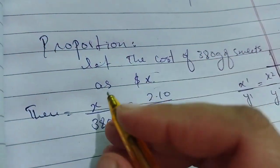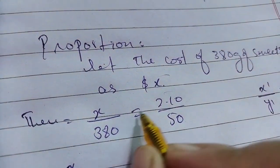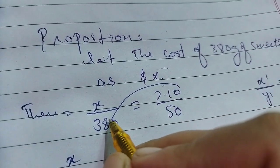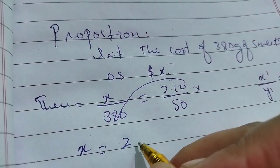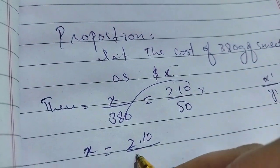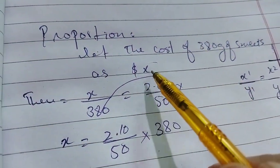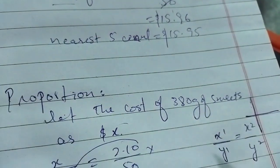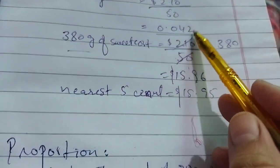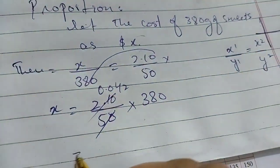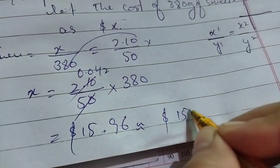We set up the proportion so that x divided by 380 equals 2.10 divided by 50. Moving 380 to the other side, it goes into multiplication: x equals 2.10 divided by 50, multiplied by 380. This gives 0.042 multiplied by 380, which equals 15.96. Rounded to the nearest 5 cents, the final answer is $15.95.